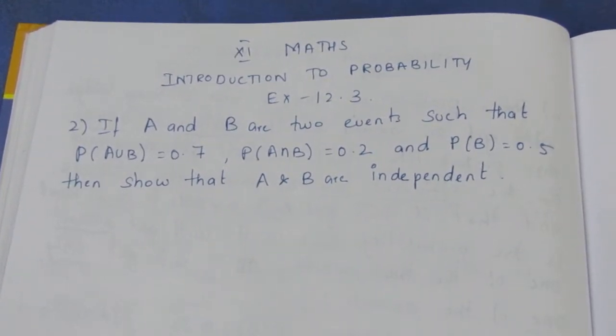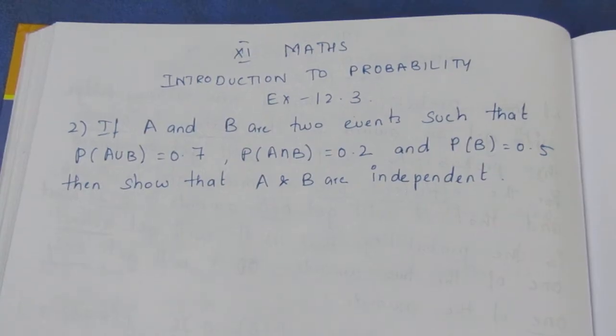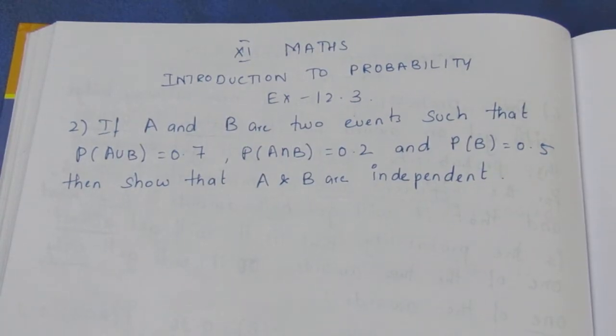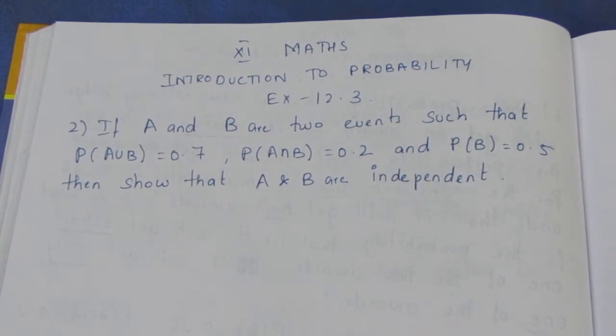In 11th grade math, introduction to probability exercise 12.3, we will solve the second sum in this video. If A and B are two events such that P(A∪B) = 0.7, P(A∩B) = 0.2, and P(B) = 0.5, then show that A and B are independent.